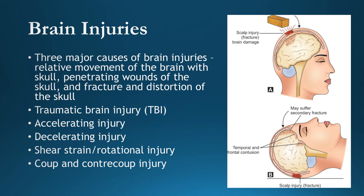Accelerating injury occurs when a moving object hits a static head; the skull picks up momentum first and hits the brain — the brain is still at rest when the skull is struck. A blow to the head with a hockey rod or iron rod is an example. Decelerating injury occurs when a non-moving object suddenly arrests the moving brain; the skull loses momentum much before the brain — for example, a motorcycle rider whose head collides with a roadway pole or tree.